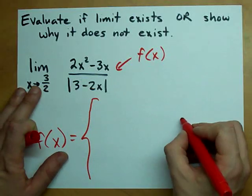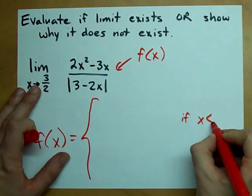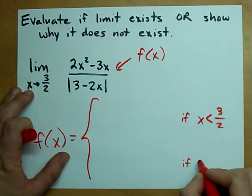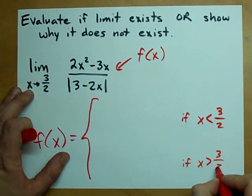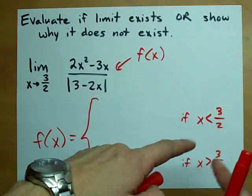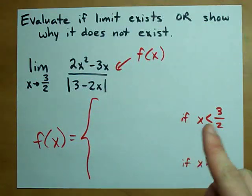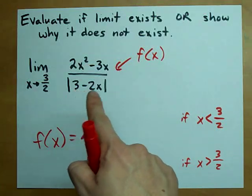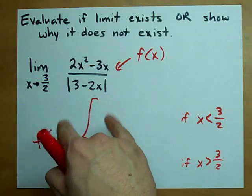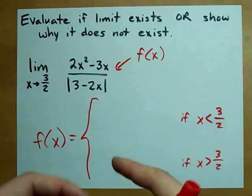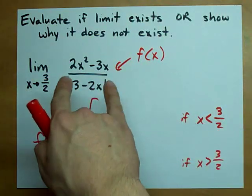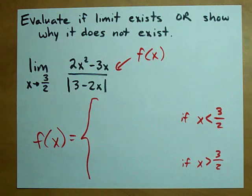f of x is... and what I'm going to do is take when x is less than 3 halves and when x is greater than 3 halves and treat those separately. The reason I'm treating them separately is because whether or not this function on the inside is positive or negative will help us determine what kind of signs we need on it if we get rid of the absolute value bars.